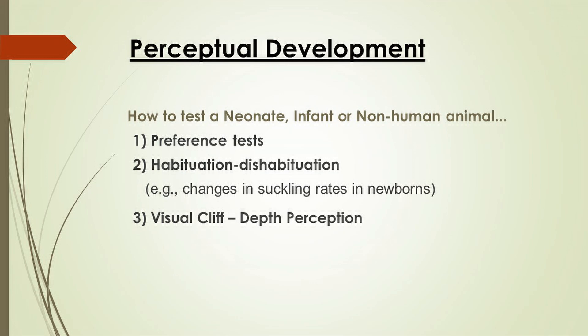If the child showed a preference for looking at one image versus the other, I could assume that the child could distinguish or tell the difference between the two images. For a child of about one or two months of age, you might present a checkerboard pattern — black and white squares — versus a gray square. What you're likely to see is that the child will look more at the checkerboard pattern because it has areas of high contrast compared to a dull-looking gray square. When you see this preference, it means the child can distinguish between the two images.